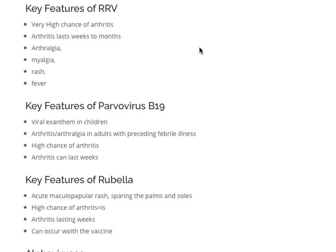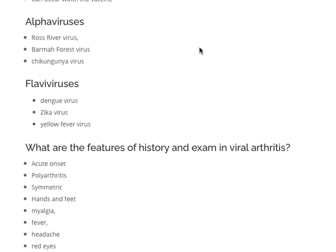With Parvovirus B19, you have arthritis or arthralgia in adults with a preceding febrile illness, and that arthritis can last weeks. In Rubella, you get an acute maculopapular rash which spares the palms and soles, and that arthritis can last weeks — this can also occur with the Rubella vaccine. Interestingly, some viruses are Alpha Viruses — including Ross River, Barmah Forest and Chikungunya — and some are Flaviviruses, including Dengue, Zika and Yellow Fever.